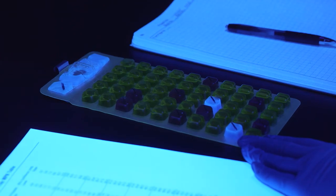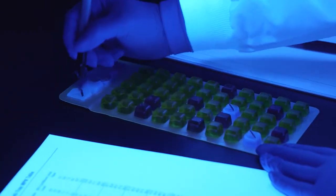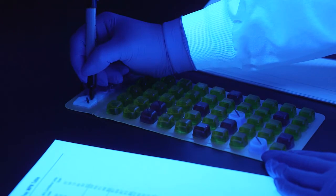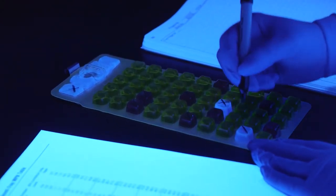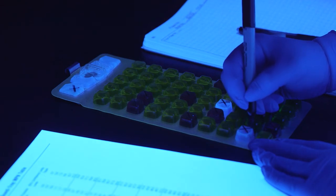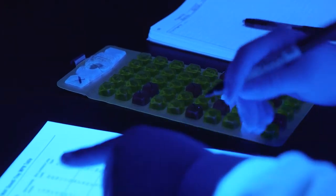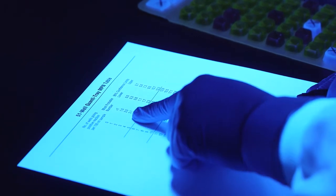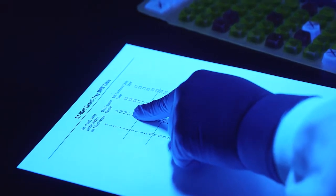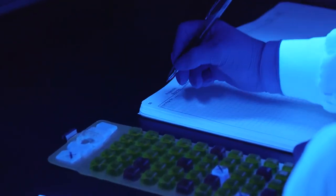To determine the number of E. coli, view the QuantaTray with a UV lamp in a dark environment, shining the light away from your eyes. Keep the light within 5 inches of the tray. Mark each fluorescent well with a permanent marker. Count the fluorescent wells, and then refer to the corresponding positive well line on the MPN table. The most probable number of E. coli for this example is 3.1 per 100 ml.